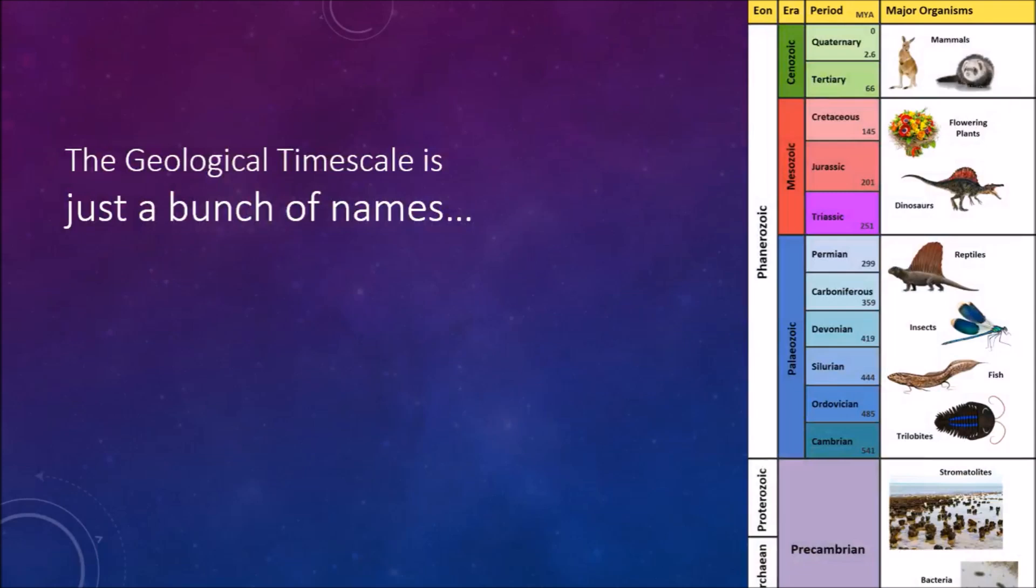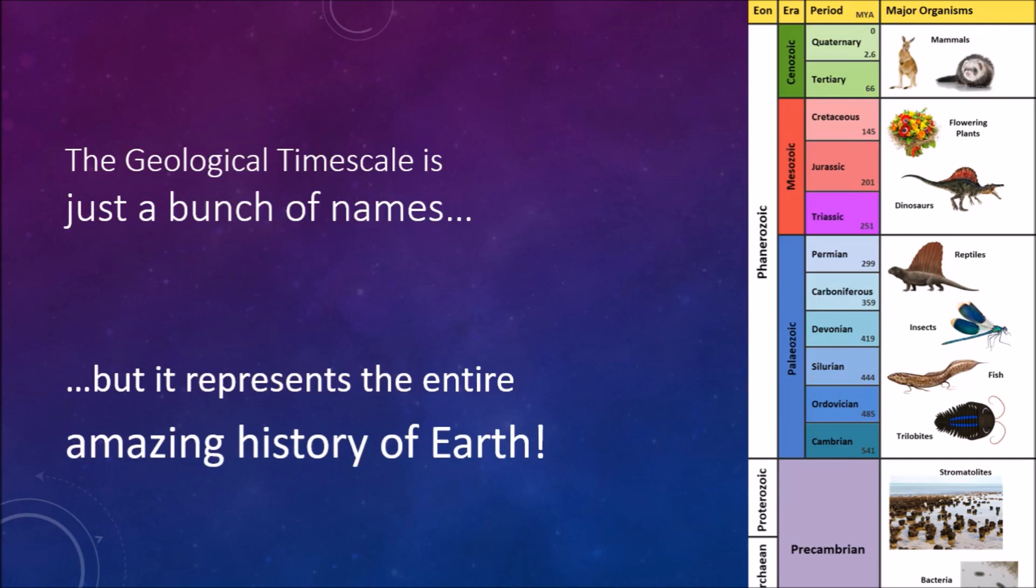All we see on the geological timescale is a series of names: Cambrian, Ordovician, Silurian, and so on. But when you look at where those names came from, and what they represent, you end up seeing back in time. The history of the earth is dramatic, and utterly mind-boggling.